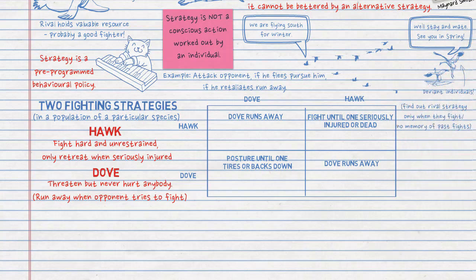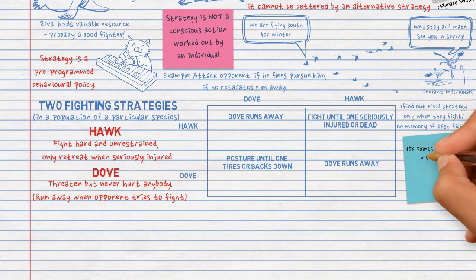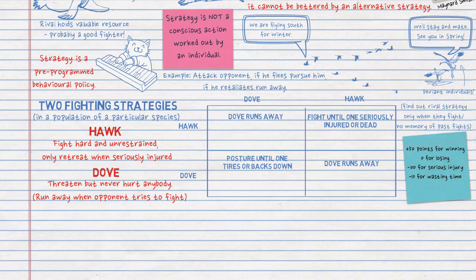If we award points to the contest — 50 points for winning, 0 for losing, minus 100 for serious injury, or minus 10 for wasting time over a long contest — these points can be converted to measure gene survival. An individual with a higher average payoff can leave many genes behind in the gene pool. The question is not whether doves will beat hawks — we know hawks always win. We want to know if either hawks or doves is an evolutionary stable strategy. If one is an ESS and the other is not, the ESS will evolve. It is also possible that there are two ESSs and the population would tend to stick at one of the two stable states it happened to reach first.